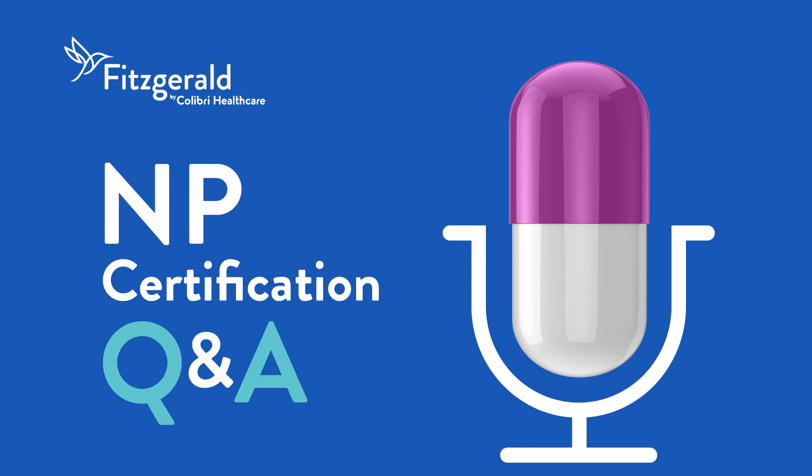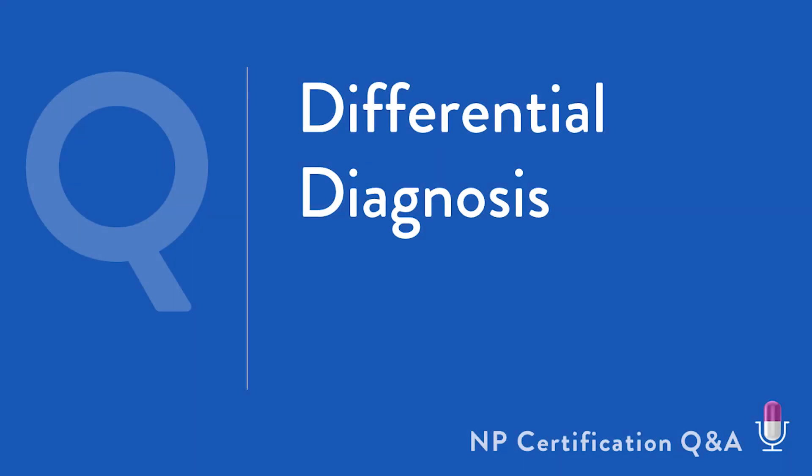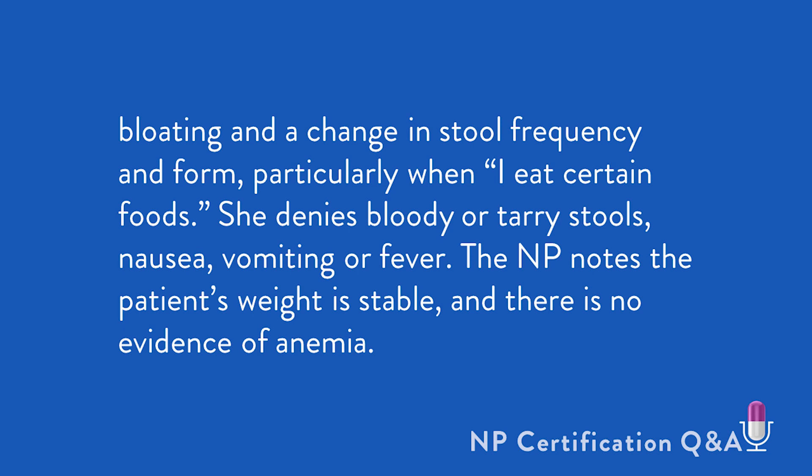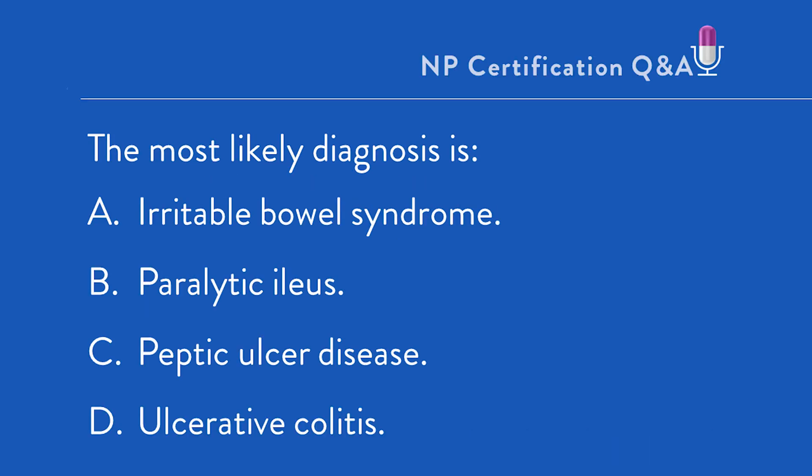Let's jump right in. A 35-year-old presents with a 15-year history of recurrent cramping abdominal pain that is often relieved with defecation. This occurs intermittently. Symptom onset is typically accompanied by bloating and a change in stool frequency and form, particularly when, quote, I eat certain foods, close quote. She denies bloody or tarry stools, nausea, vomiting, or fever. The NP notes that the patient's weight is stable and there's no evidence of anemia. The most likely diagnosis is: